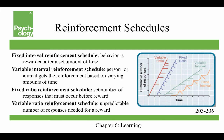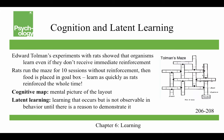A variable ratio reinforcement schedule is when there's an unpredictable number of responses needed for a reward. This is considered the most productive because you don't know when the payoff is coming, so you keep doing the behavior. It's also the most resistant to extinction, because maybe if you do that behavior one more time, this time you get paid. The example of this is gambling — Skinner talks about slot machines where sometimes you get paid off and you don't know when, so you keep playing.